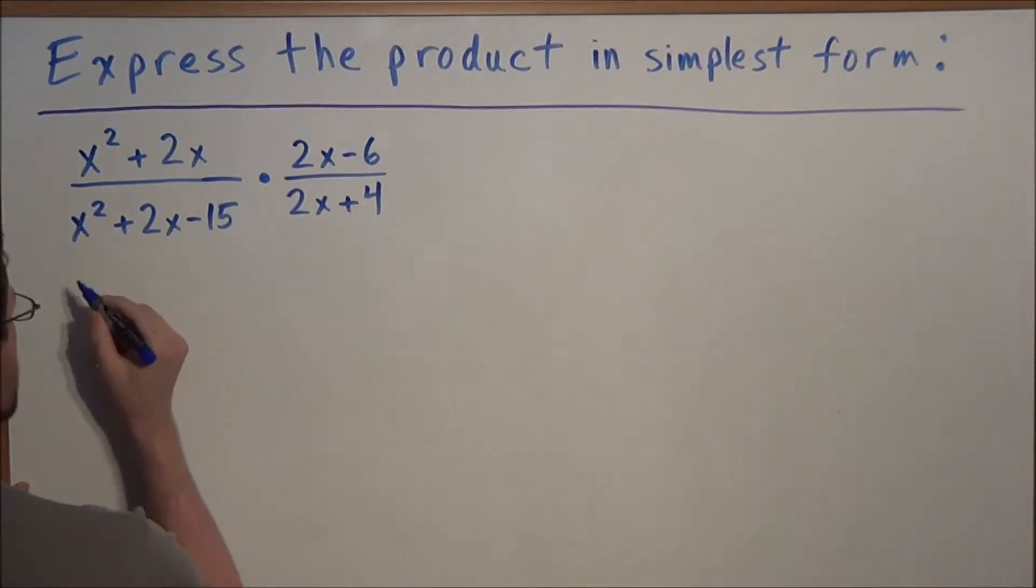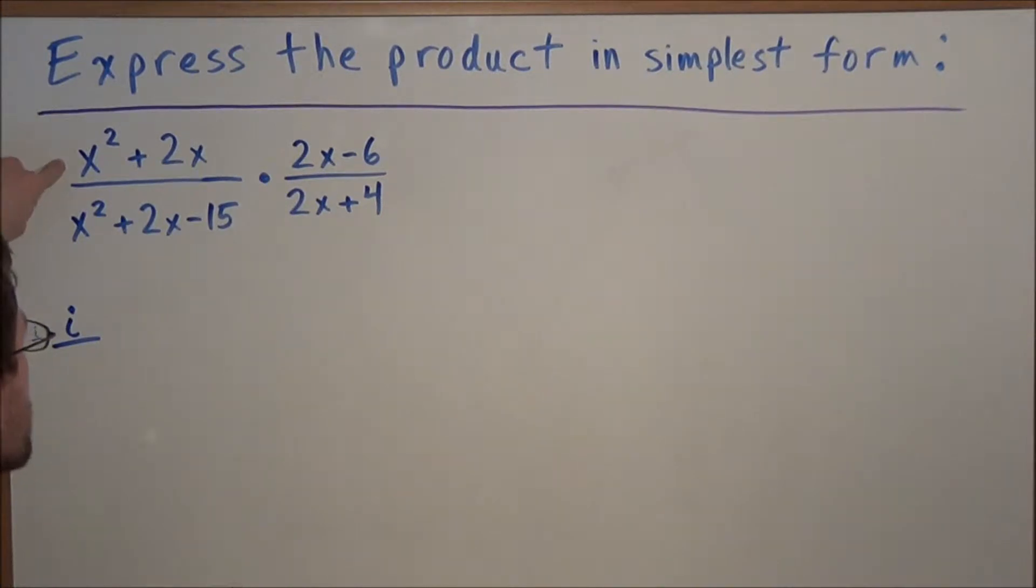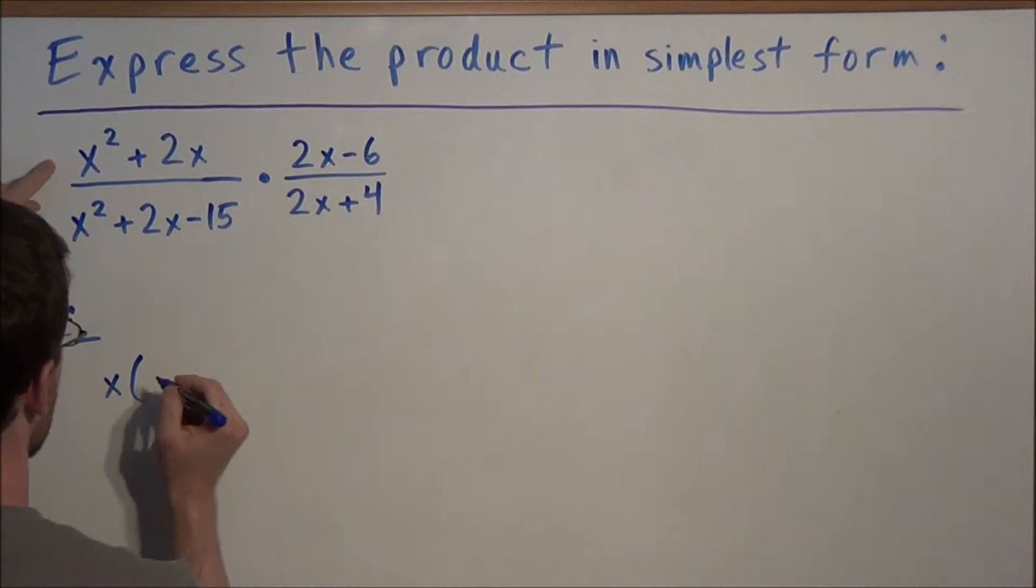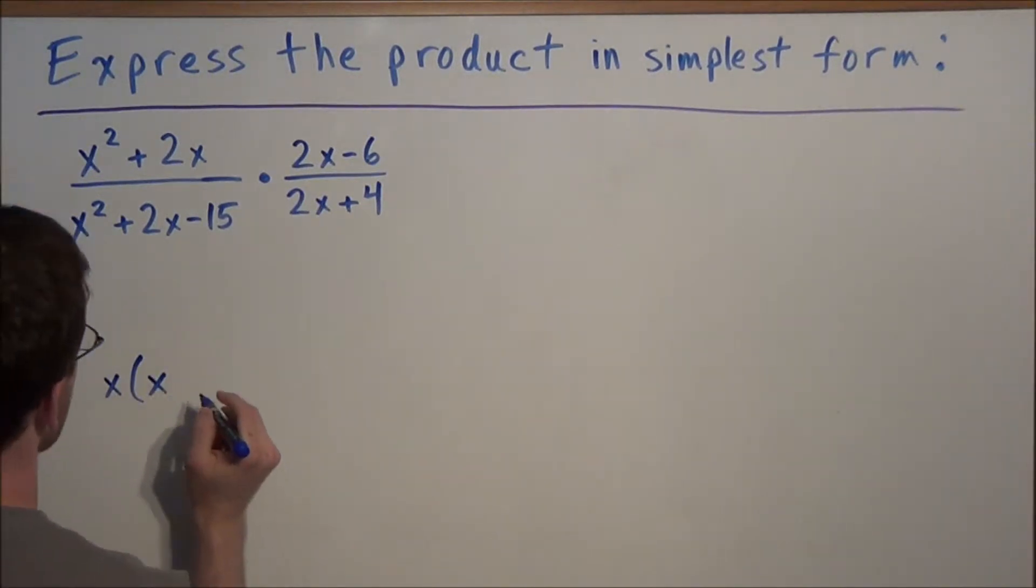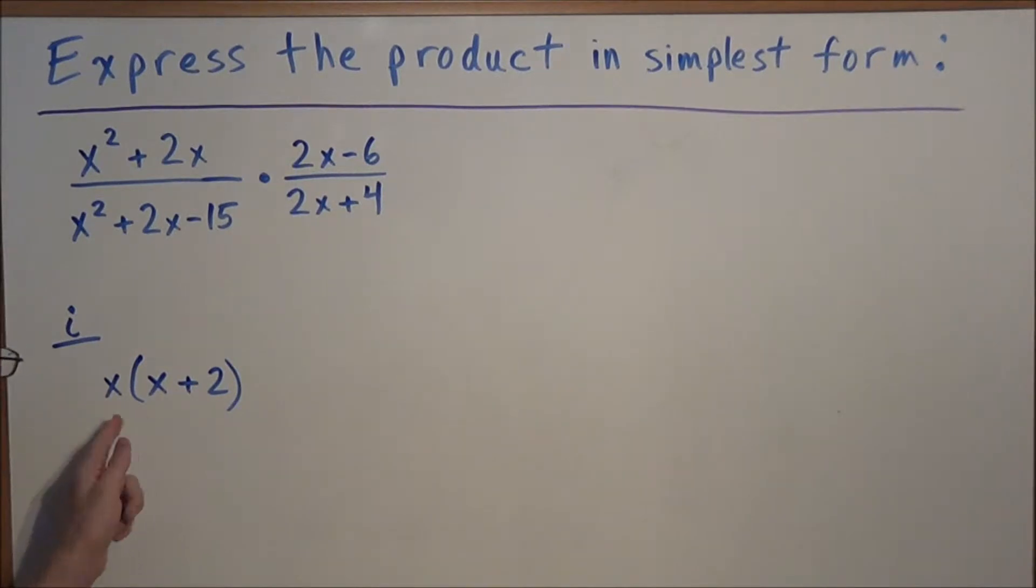So the first thing we could do is we target the numerator of the first fraction and we notice that x squared and 2x have a greatest common factor of x. So if we factor out an x, on the first term we're left with x and on the second term we're left with positive 2. And we can check that we did this correctly by redistributing: x times x is x squared, x times positive 2 is positive 2x. So we know that we did this right.